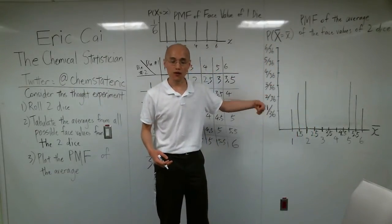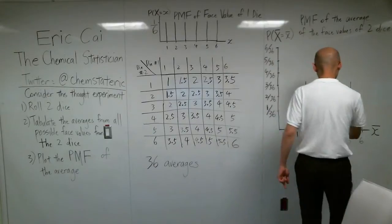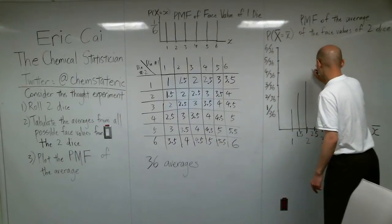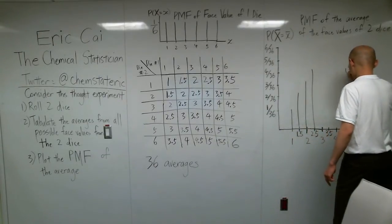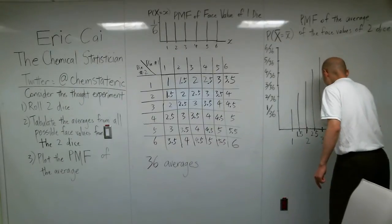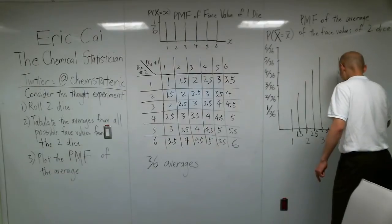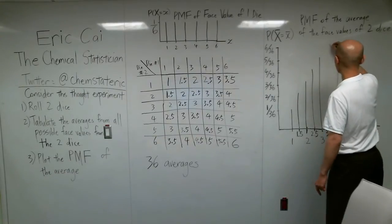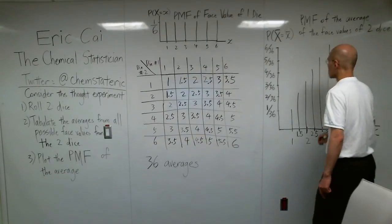I think you get the trend now, so I'm just going to fill out the rest of this PMF. 2.5 and 4.5, 4 over 36. 3 and 4, 5 over 36. 3.5, 6 over 36.